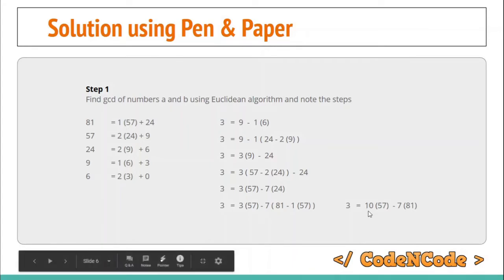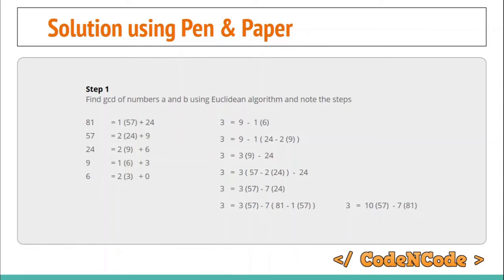So the solution is x = 10 and y = -7, satisfying 57x + 81y = gcd(57, 81). The steps of the Extended Euclidean Algorithm are just the reverse process of the Euclidean algorithm — instead of going top to bottom, we start from the bottom and keep replacing the remainder of each equation going upward: first replacing 6, then 9, then 24, until we are left with a and b.